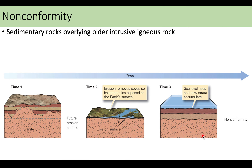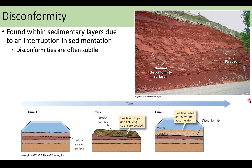A nonconformity is where we have sedimentary rock overlying either metamorphic or igneous rock — something is missing between that igneous rock and those sedimentary layers. Disconformity is probably the most difficult to pick out in the field — this is where something is missing but it's between two sedimentary layers. Where sedimentary layers are not perfectly horizontally layered, you notice something must be missing; there must have been some erosion.